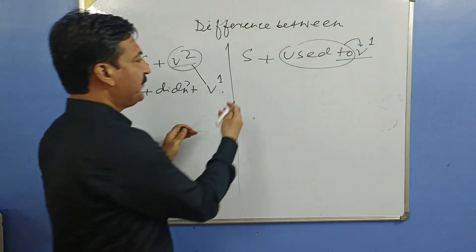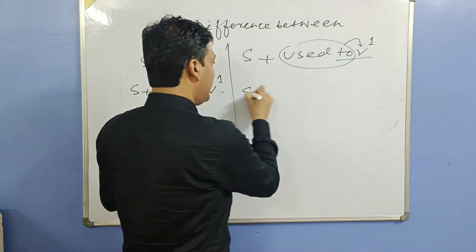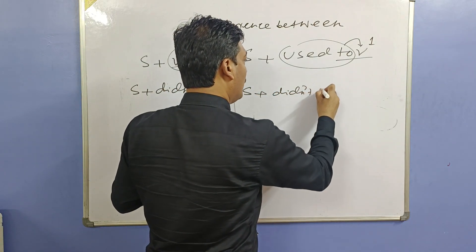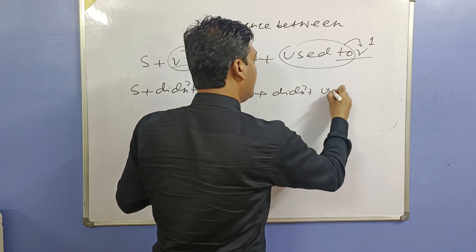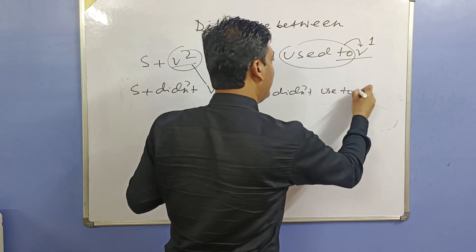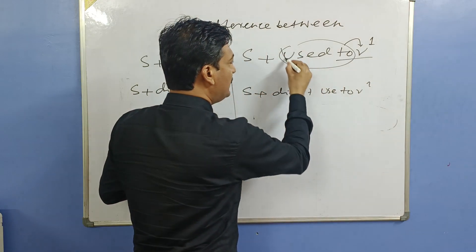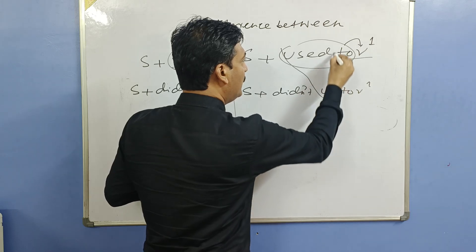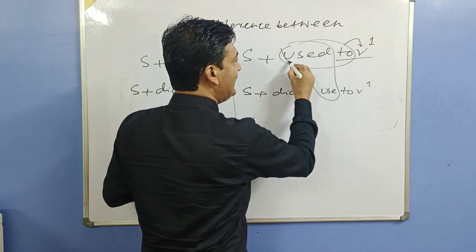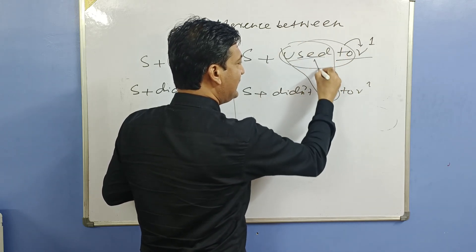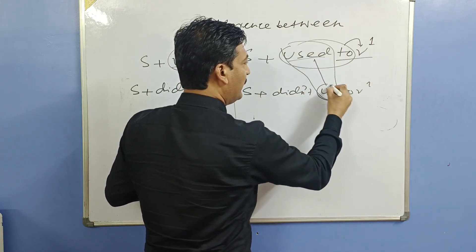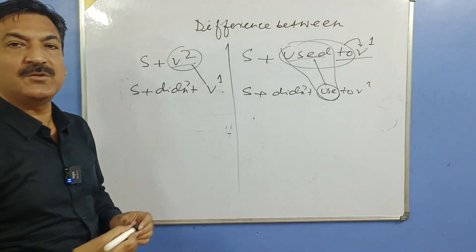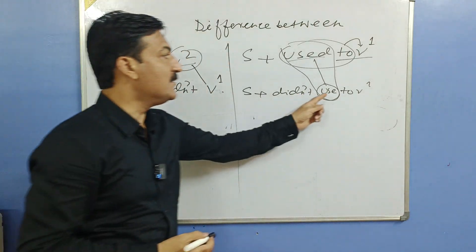Toh 'did not' we will use, aur agar 'used to' ki negative kahein, toh past hai toh 'did not', uske baad 'use to' — note the spelling: normally it is U-S-E-D, but jaise hi 'did' ka istemal kiya, ab ho gaya U-S-E. D is dropped, kyunki do, does, did ke baad verb apne pehle form mein aa jaata hai.